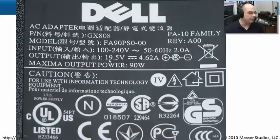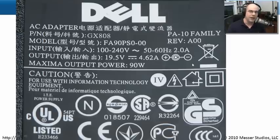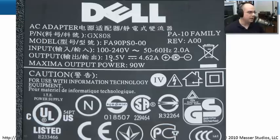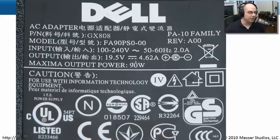On the other side of this power supply, it outputs 19.5 volts of DC power at 4.62 amps. The inside connection is the positive side and the outside connection is the negative side, so you can connect your multimeter to the inside and outside connectors to determine whether you're getting 19.5 volts at 4.62 amps. Notice that the maximum output power for this particular laptop power supply is 90 watts. If your laptop needs more than 90 watts, this power supply won't work. When replacing the adapter, make sure you replace it with one that provides at least 90 watts.